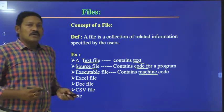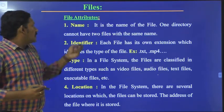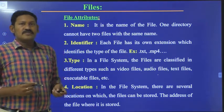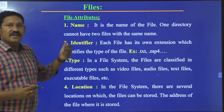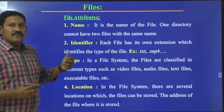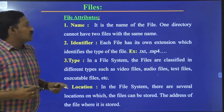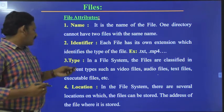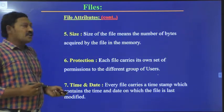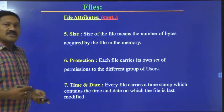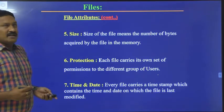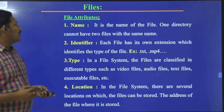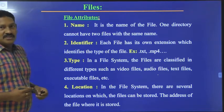Next we will see file attributes. We have different attributes of a file. Some of them are: name, identifier, type, location, size, protection, and time and date. We will see each of them in detail.